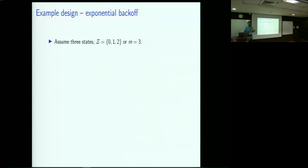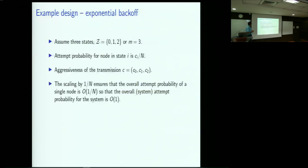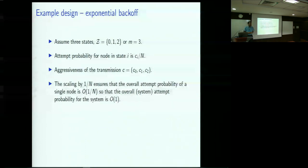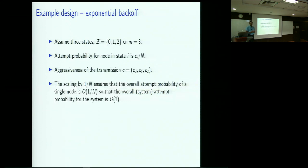Here is an example design involving exponential backoff. Assume there are only three states: 0, 1, and 2, so m equals 3. The attempt probability for a node in state i is something that depends on the total number of nodes in the system. I'm going to think of a scaling framework where the number of nodes goes to infinity, so we need to scale the attempt probabilities down by the number of nodes. The attempt probability for a node in state i is c_i over n.